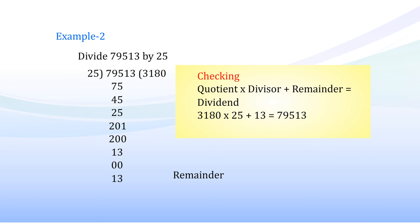Example 2: Divide 79,513 by 25. Solution: 79,513 ÷ 25 = 3,180 with remainder 13. Checking: Quotient × Divisor + Remainder = Dividend → 3,180 × 25 + 13 = 79,513.